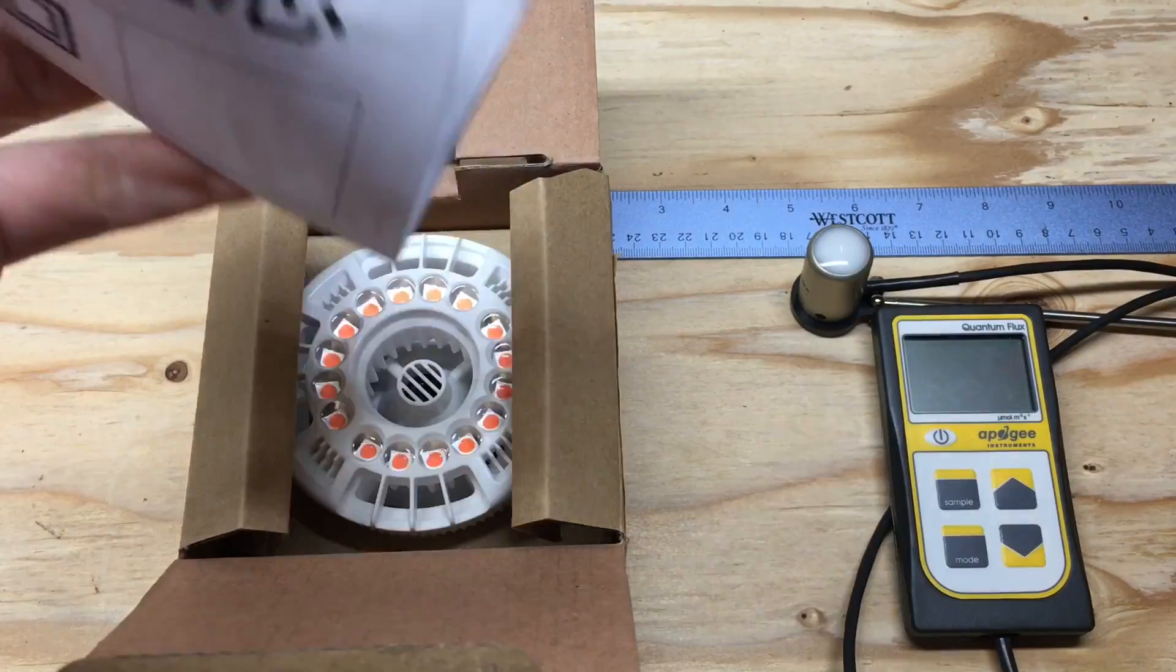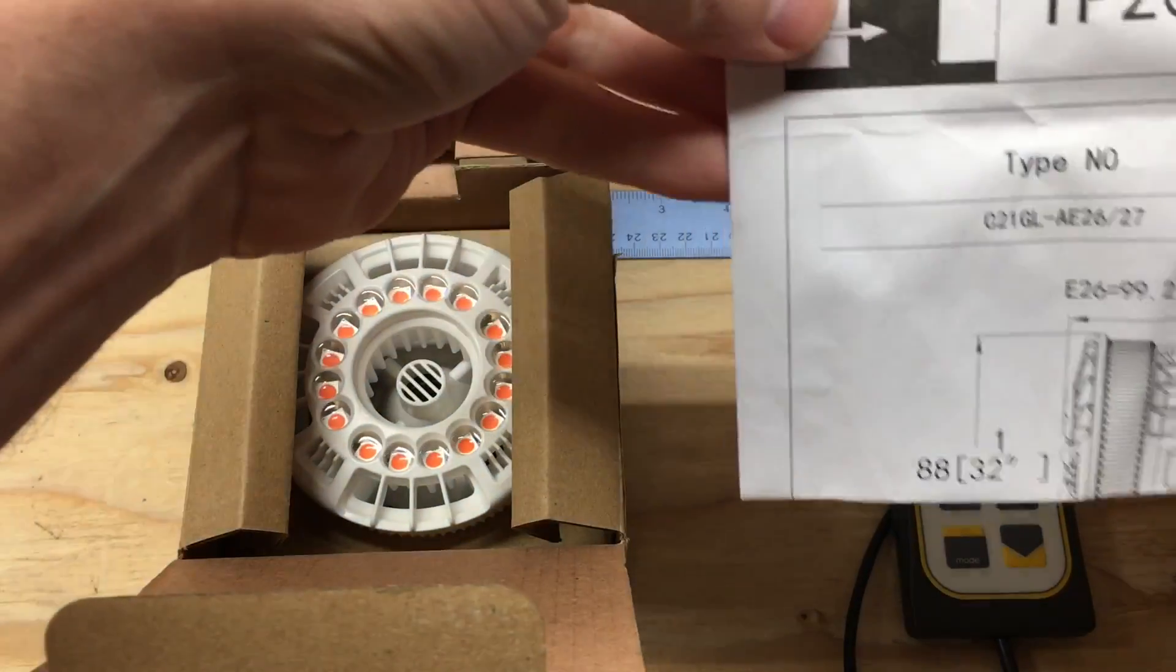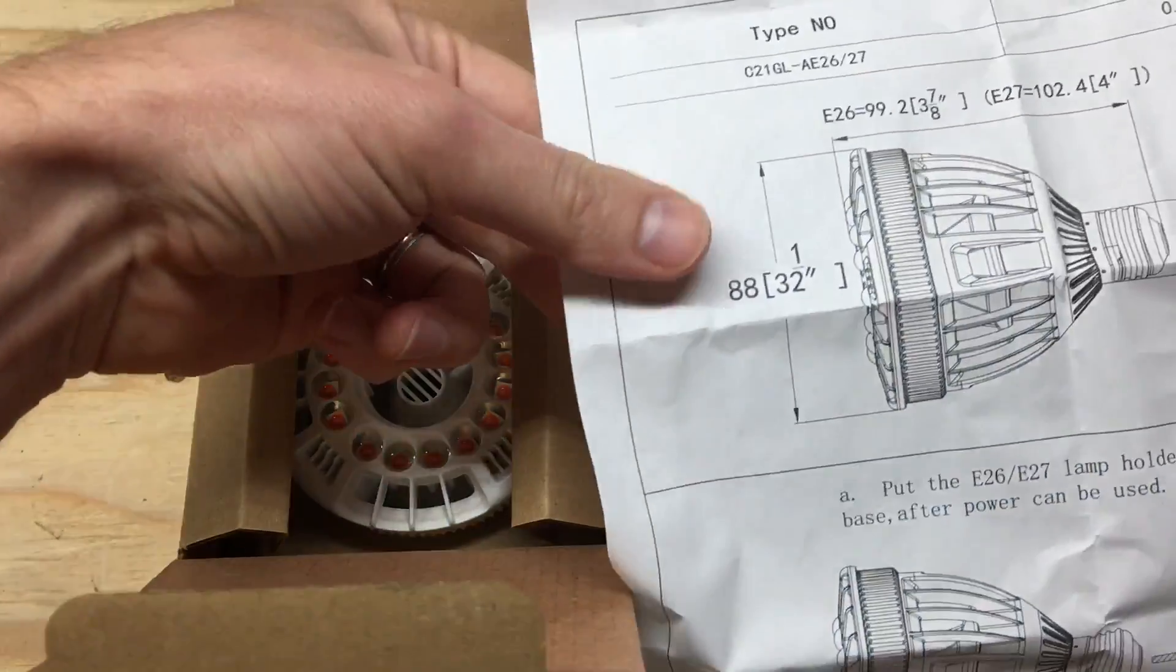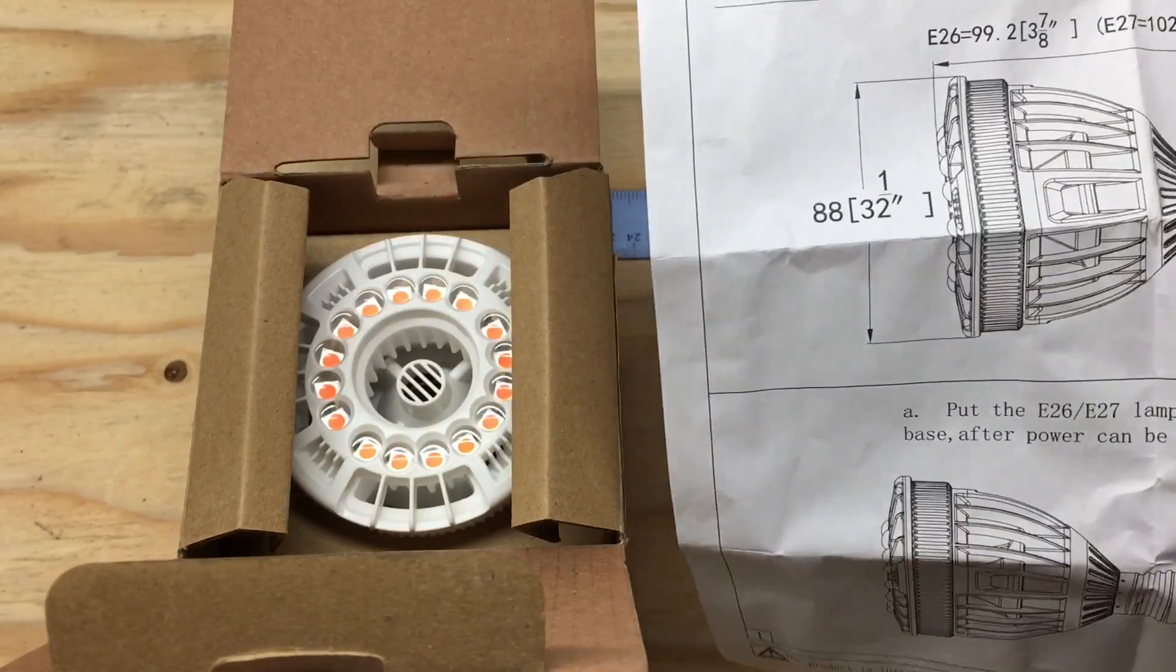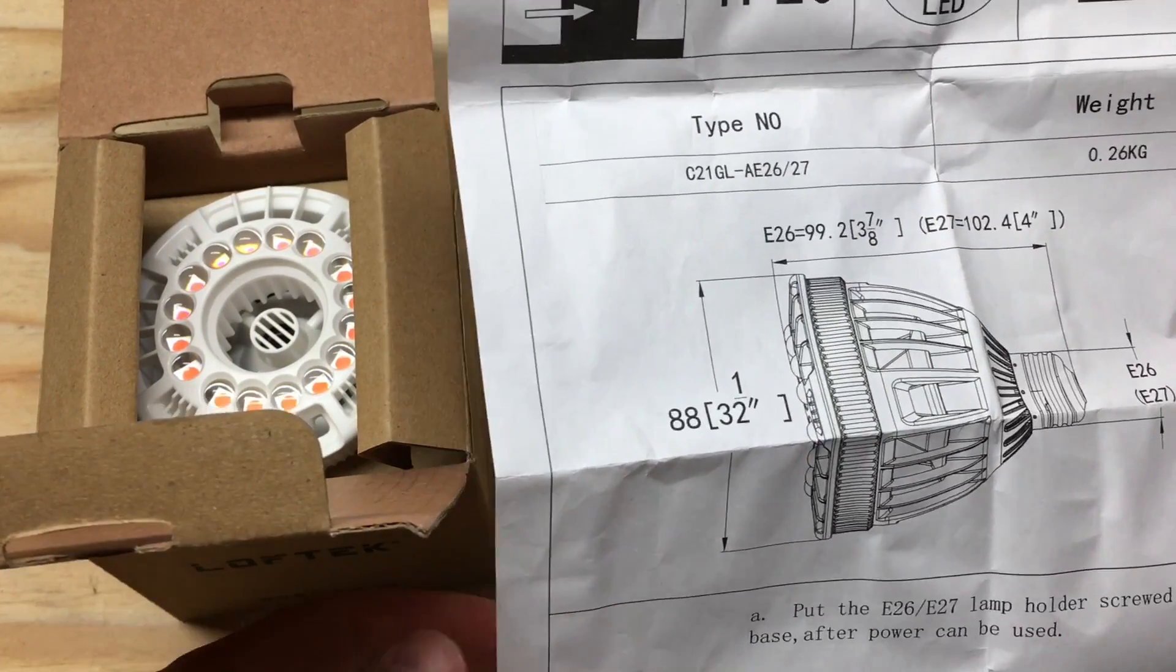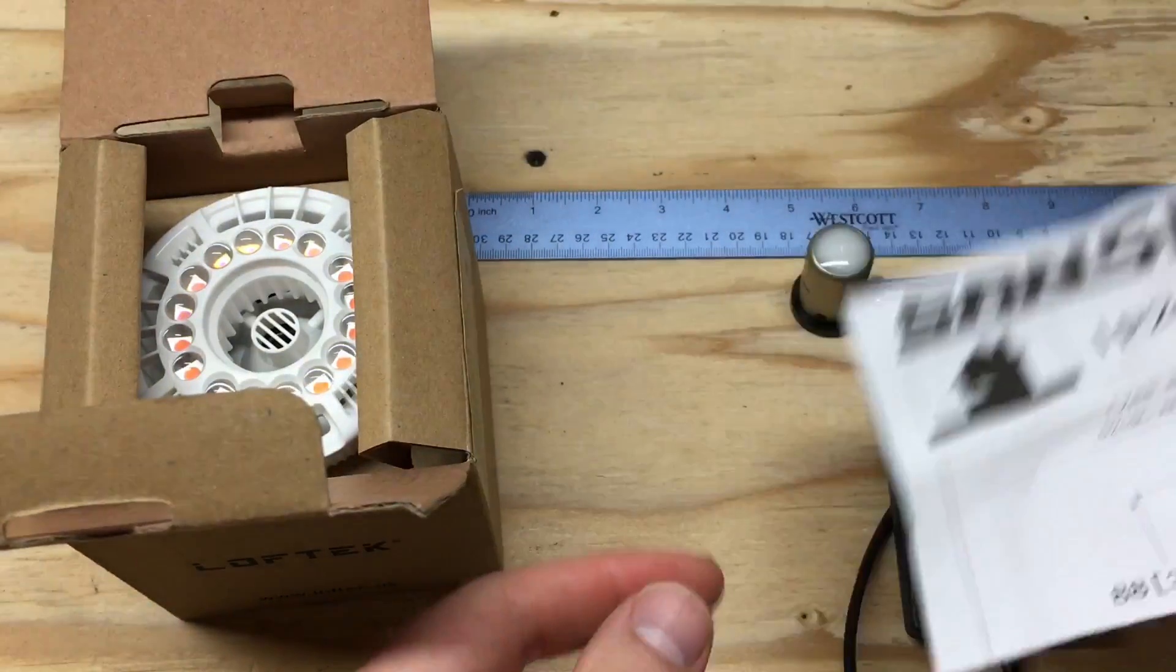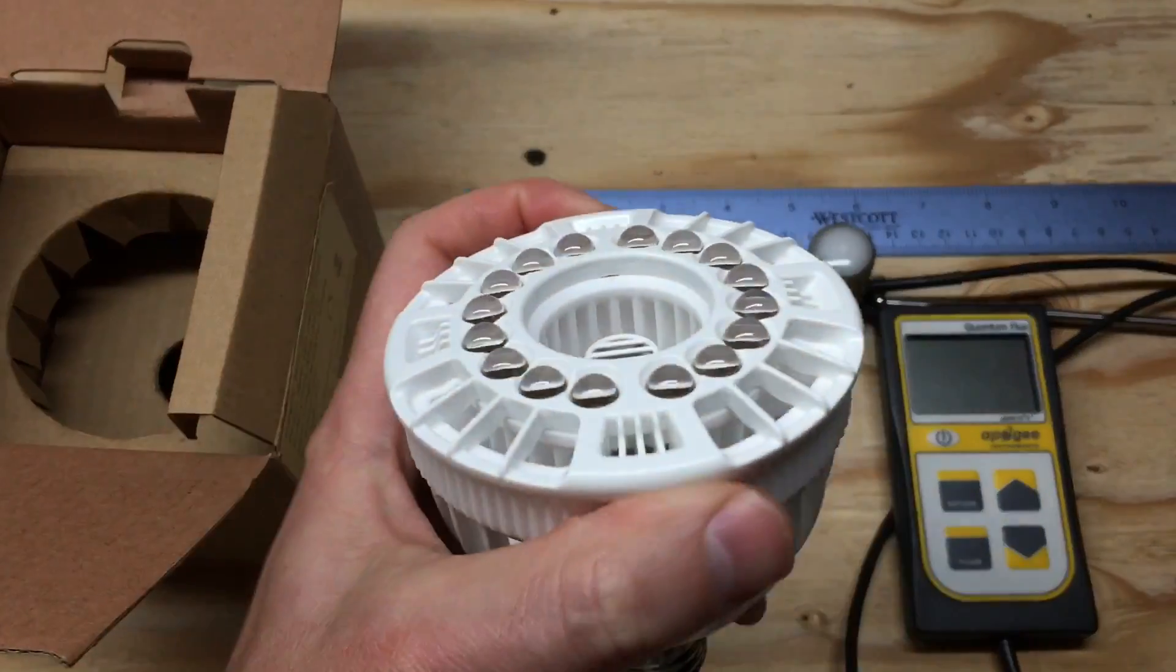One of the things that sets this company apart from other companies is that on all of their lights they use a ceramic base as a heat sink. So what does the ceramic base do? It's basically a really good conductor of heat. That means the heat will be drawn off the LEDs more efficiently than aluminum, and this will lead to a longer LED lifetime.